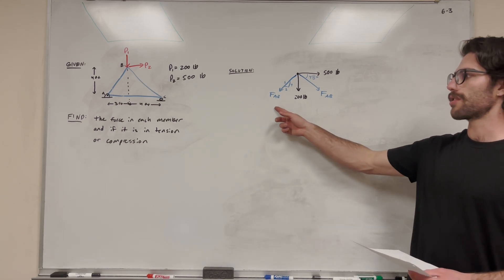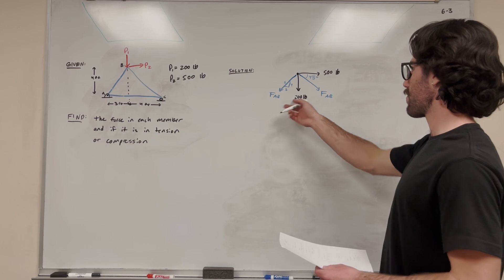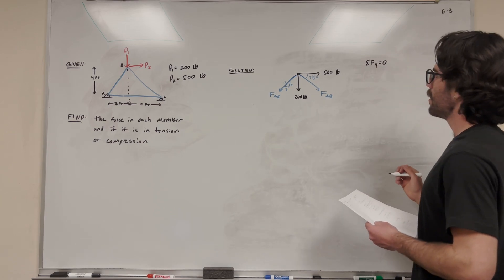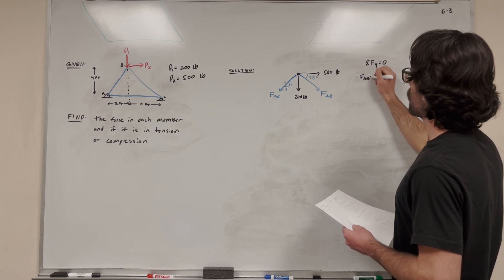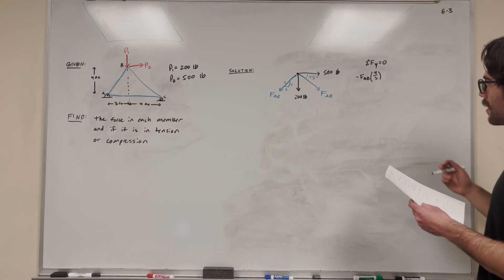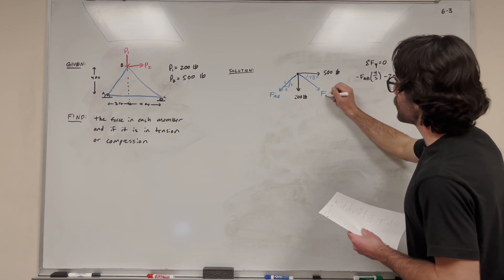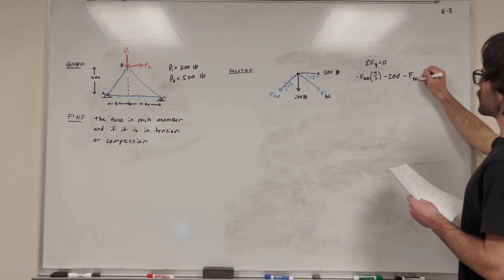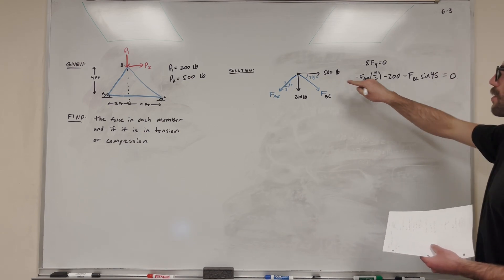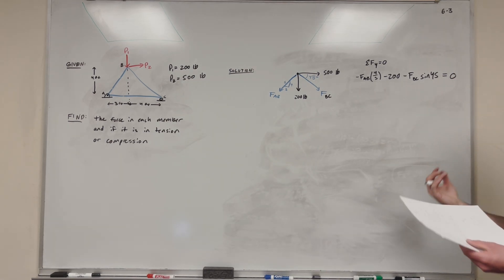If we get a negative number it just means the force is flipped 180 degrees — it's in compression. Now let's solve. Sum of forces in the Y direction equals zero: negative force AB times 4/5, minus 200 pounds, minus force BC times sine 45 equals zero. The 500-pound force is horizontal so it doesn't appear here. We have two unknowns in one equation, so we can't solve it yet.